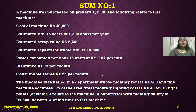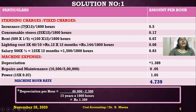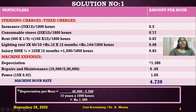All standing charges must be converted to per annum first, then divided by 1,800 hours to get the per-hour rate. Insurance is given as 75 rupees per month. So: 75 × 12 = 900 rupees per annum, divided by 1,800 hours = 0.5 rupees per hour for insurance.